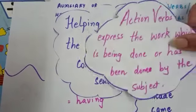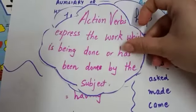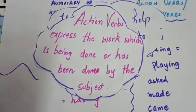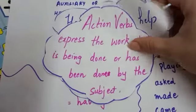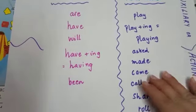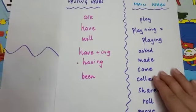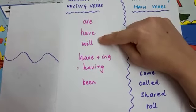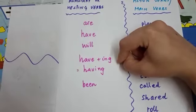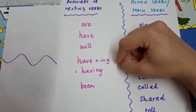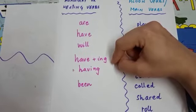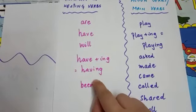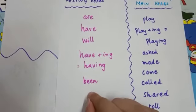And what are action verbs? Action verbs express the work which is being done or has been done by the subject. Now, in the story I used various verbs. First, the auxiliary verbs: are, have, will, and have plus -ing. The sound of -ing is 'ing.' So when we add have plus -ing, it becomes -ing. And we also used 'being.'